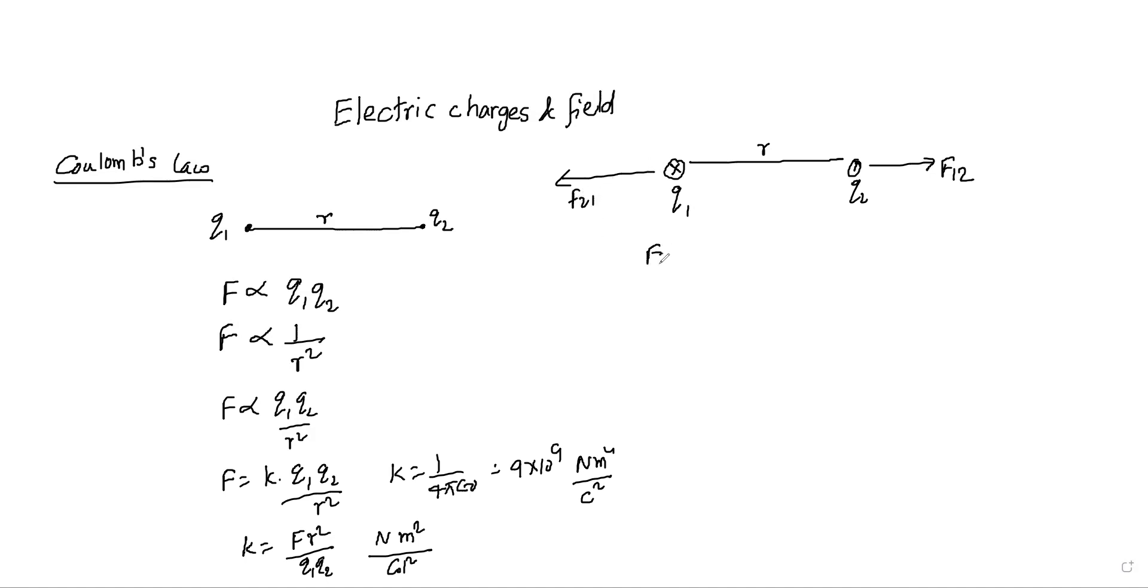So F21 is equal to force on charge q2 due to q1. That is equal to 1 by 4 pi epsilon naught into q1 q2 by r square into r12 cap. Where r12 cap is equal to r12 bar by r, which is a unit vector.